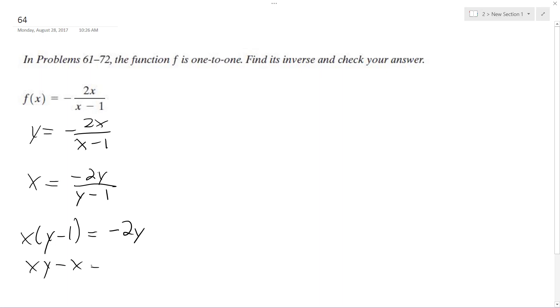So I get xy minus x equals negative 2y. And then what I'm going to do is get y's on one side. So I get negative 2y minus xy is equal to negative x. So then I get y, pull out the y, negative 2 minus x equals negative x.